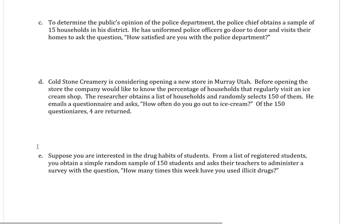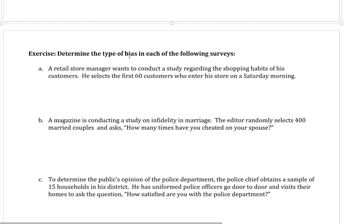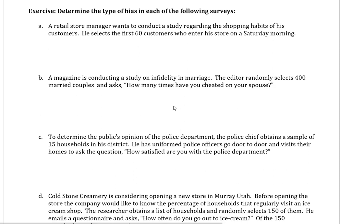Okay, we have some examples here, and we're going to identify the different types of biases. Now again, we only have three different types of biases we're going to analyze. We have either sampling, response, and non-response. So these are the types of bias we're going to look for.